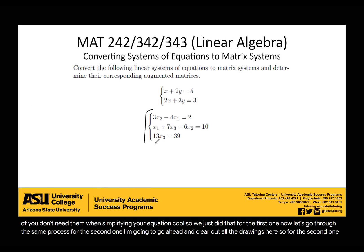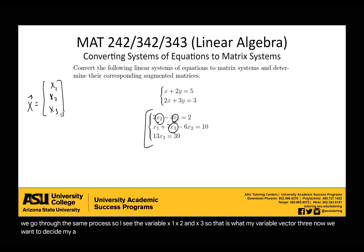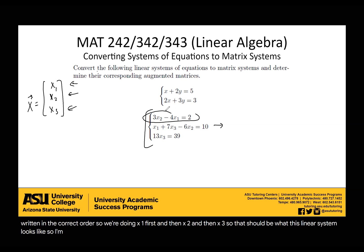For the second one, we go through the same process. I see the variables x1, x2, and x3. So that is what my variable vector is going to be: x1, x2, and x3. Now I want to decide my A matrix. Typically the easiest way to do that is to make sure you have all your variables written in the correct order. We're doing x1 first, then x2, then x3. I'm going to reorganize all of my equations so that my x1 comes first, my x2 comes second, and my x3 comes third.